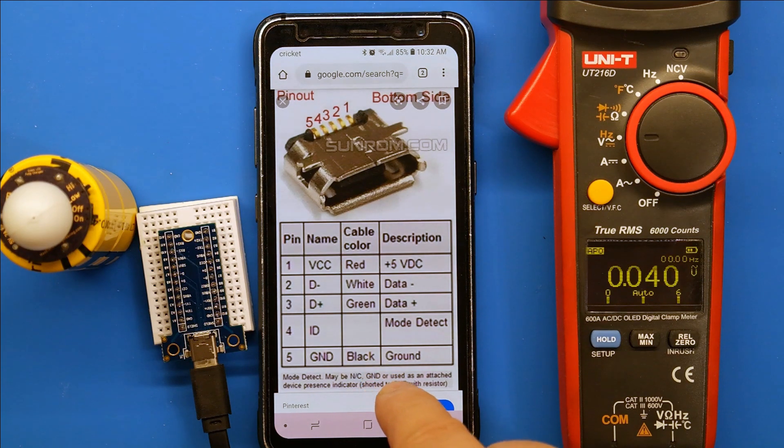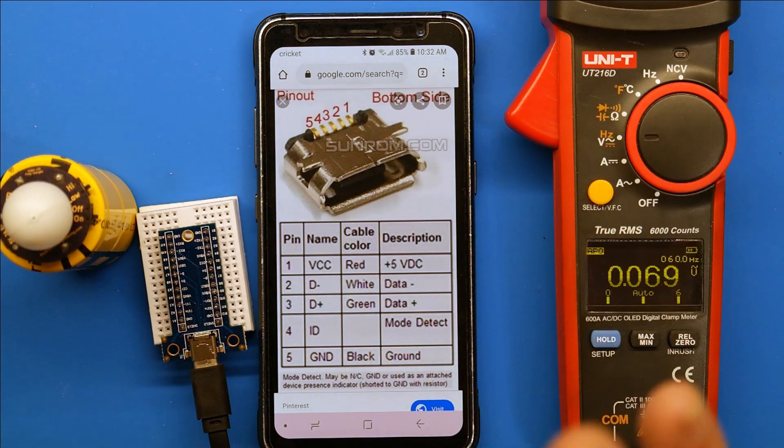So basically most people when they're doing Arduino projects and they just need power, they use pin one and pin five. Real quick, real simple, real easy.